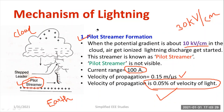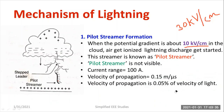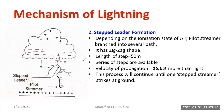Moving on to the second step: the formation of the stepped leader. Once the pilot streamer has formed, ionization of air — depending on moisture content and other factors affecting the gaseous dielectric medium — causes the pilot streamer to deviate into different branches.